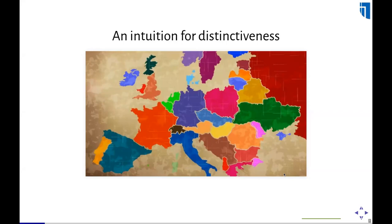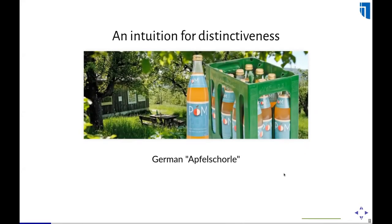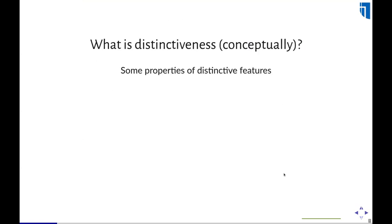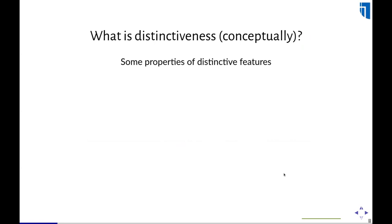What is a distinctive drink for Germans? I would argue it's Apfelschorle — a mix of sparkling mineral water with apple juice. It's something that everybody in Germany drinks, and you can buy it ready-made in bottles, but virtually nobody else ever drinks it in any other country. So Apfelschorle is a distinctive drink for Germans, whereas beer is only typical. Distinctiveness is about Apfelschorle, not about beer.